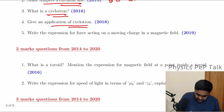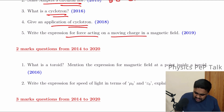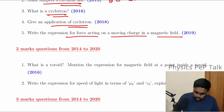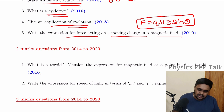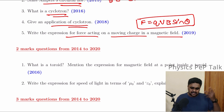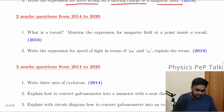Write the expression for force acting on a moving charge in a magnetic field. F is equal to QVB sin theta. This expression is written for one mark easily. So two marks are asked.